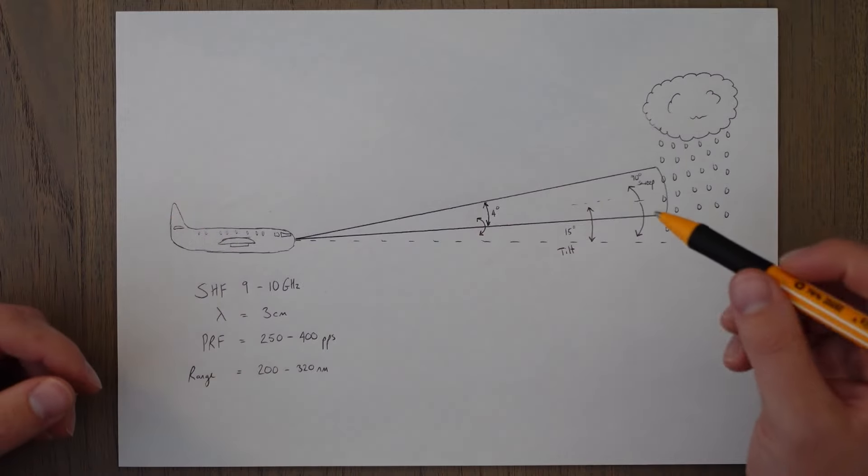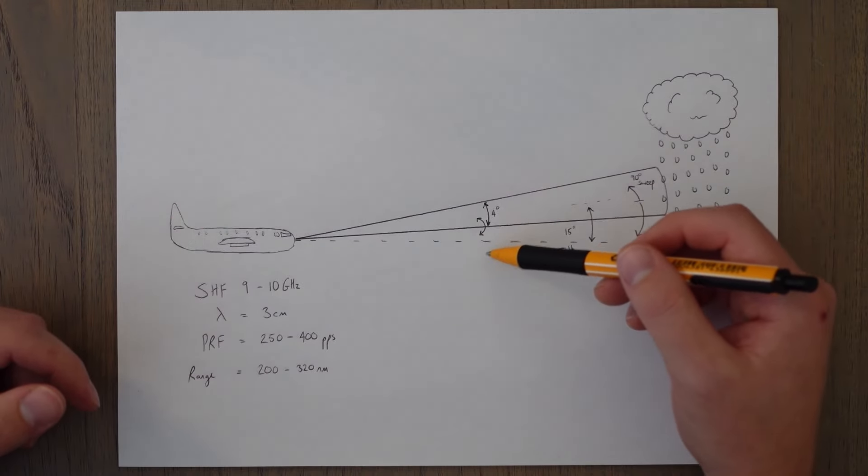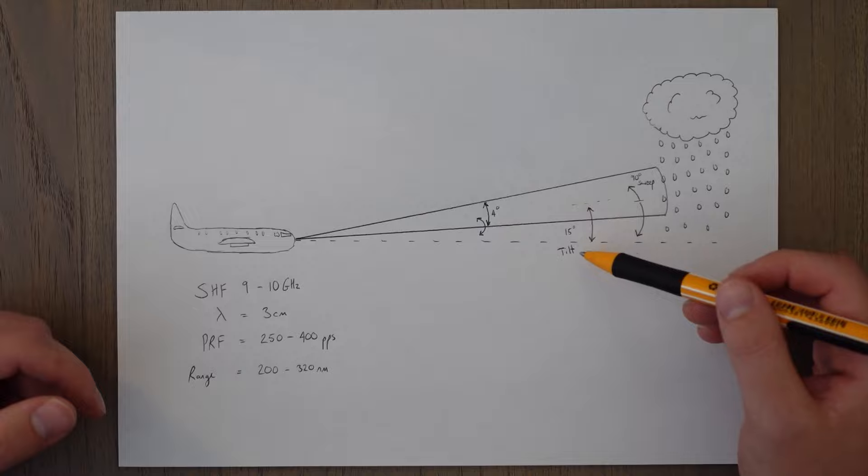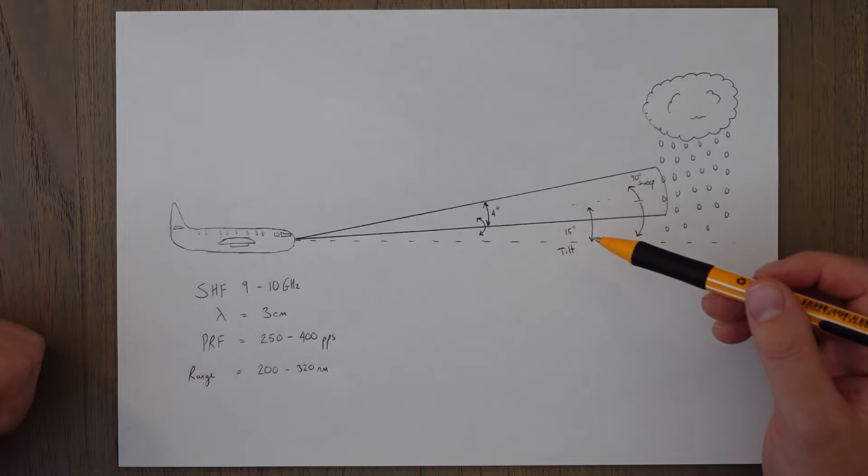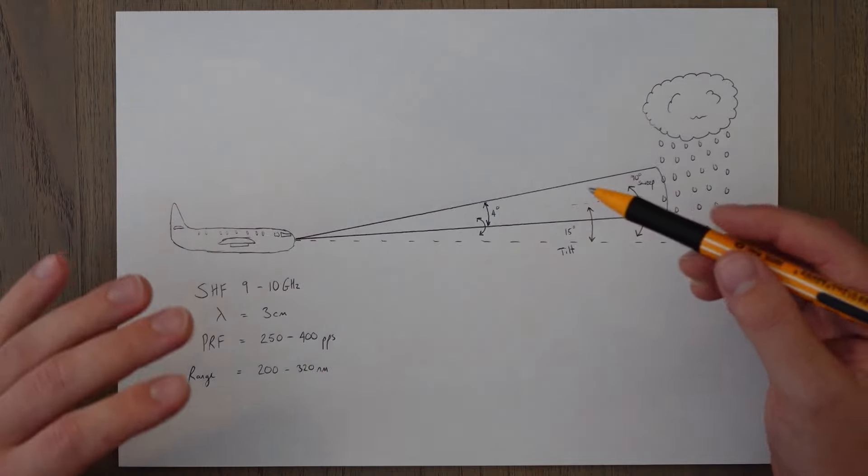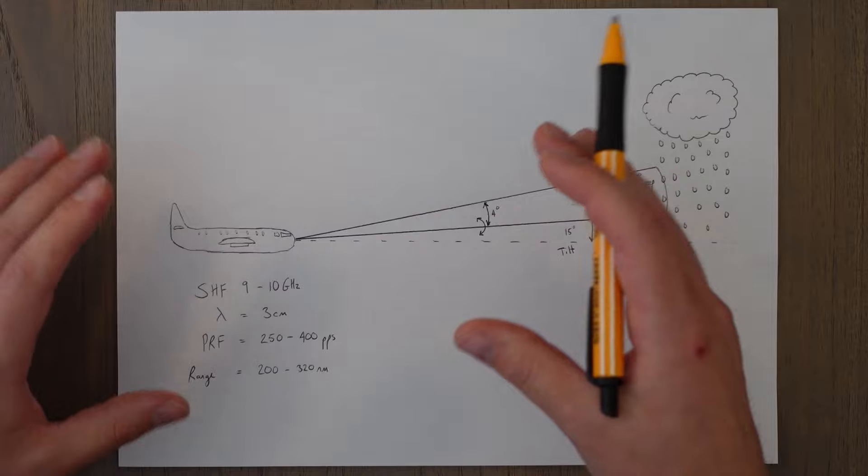The beam is about 4 degrees wide vertically and horizontally and it can be tilted up or down by about 15 degrees. Some manufacturers may have slightly different values but they will be near to these numbers.